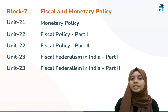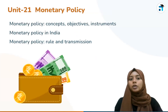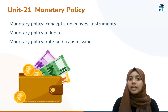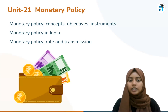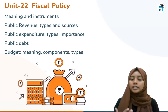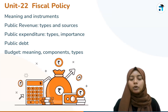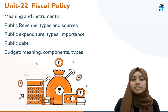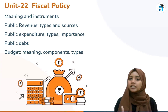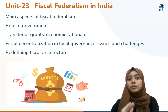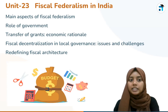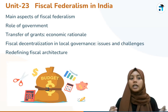Block 7 is Fiscal and Monetary Policy. Unit 21 covers monetary policy — its objectives, role, and transmission mechanism. Unit 22 covers fiscal policy — public revenue, public expenditure, public debt, budget, and taxes. Unit 23 is Fiscal Federalism in India — what is fiscal federalism and what is the role of government.